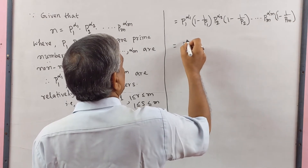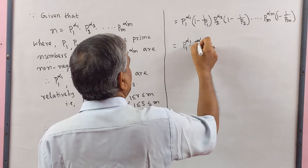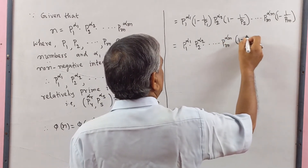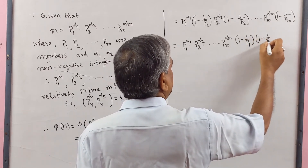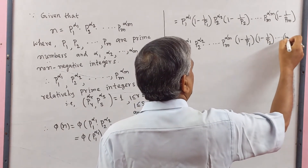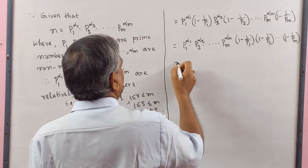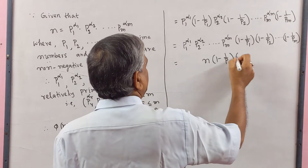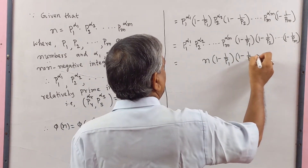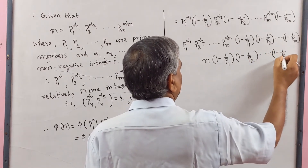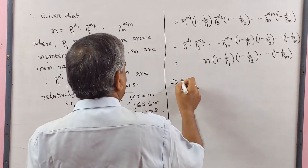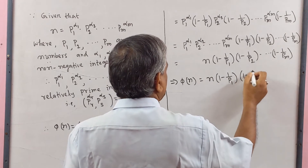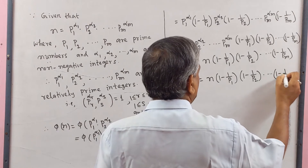This equals P1^alpha1 · P2^alpha2 · dot dot dot · Pm^alpha m, multiply (1 minus 1/P1) · (1 minus 1/P2) · dot dot dot · (1 minus 1/Pm). And this equals n multiply (1 minus 1/P1) · (1 minus 1/P2) · dot dot dot · (1 minus 1/Pm). Therefore phi(n) equal to n · (1 minus 1/P1)(1 minus 1/P2)·dot dot dot·(1 minus 1/Pm).